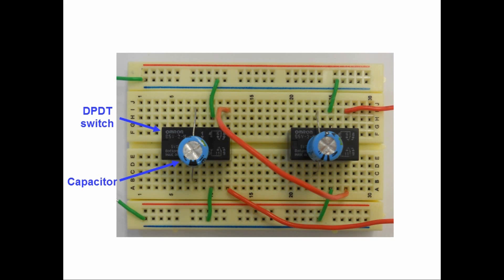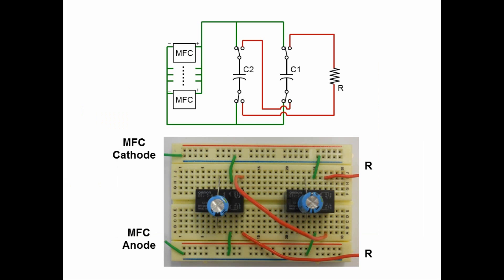And on this circuit, we have two capacitors and two double-pull double-throw switches, sitting on a breadboard with several pieces of wires for connections. And on the top of this slide, we can see a simplified circuit diagram. And on your left-hand side of the diagram, we have multiple microbial fuel cells, or MFCs.